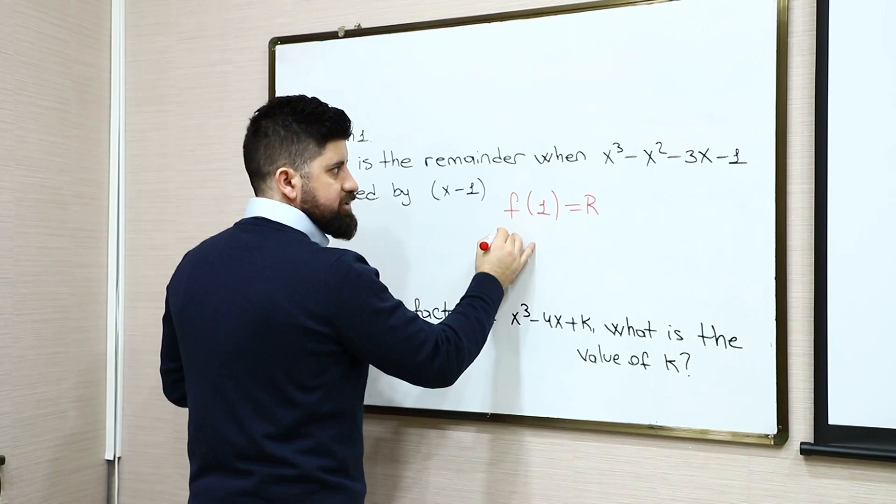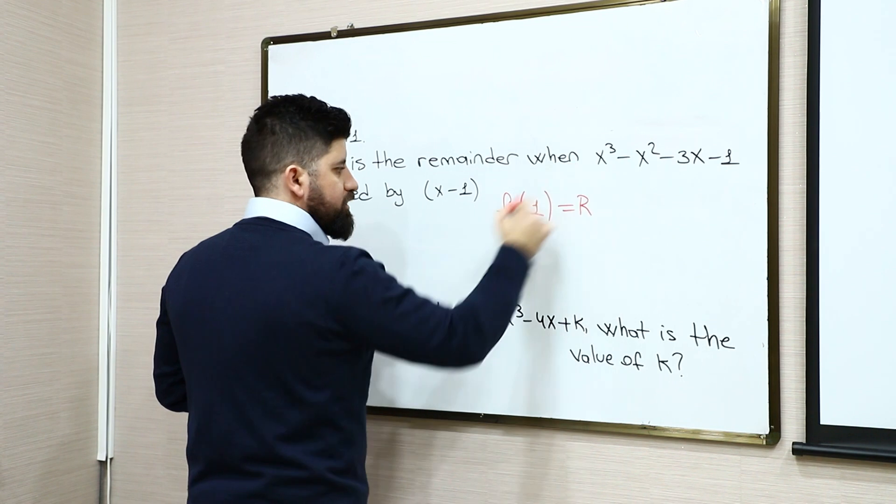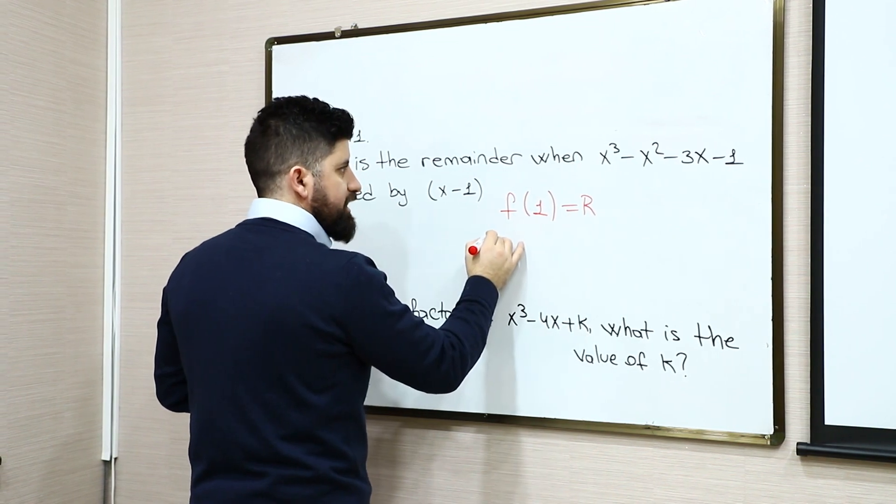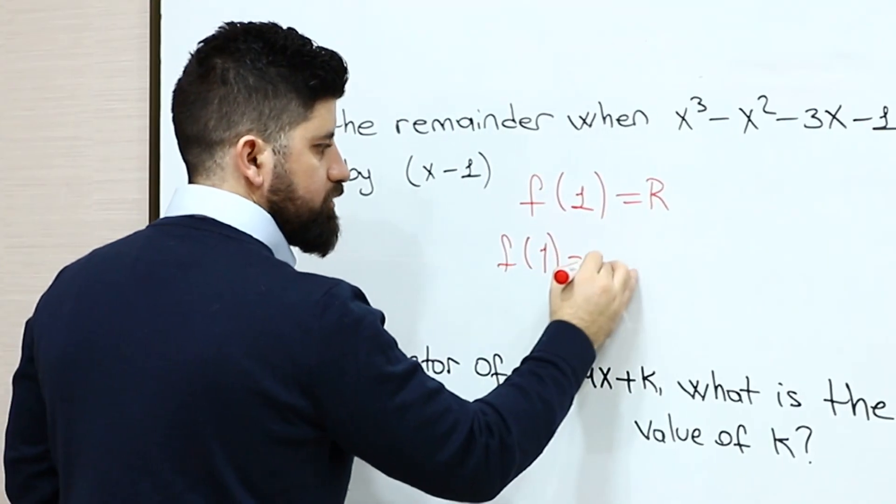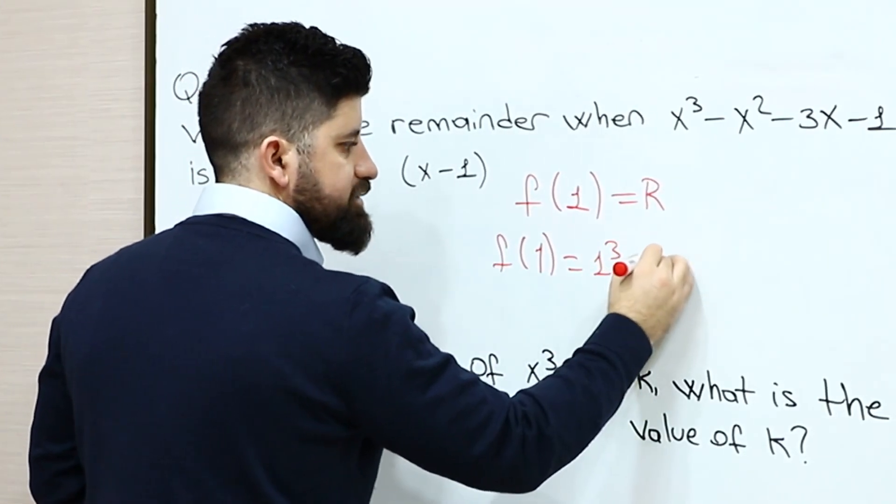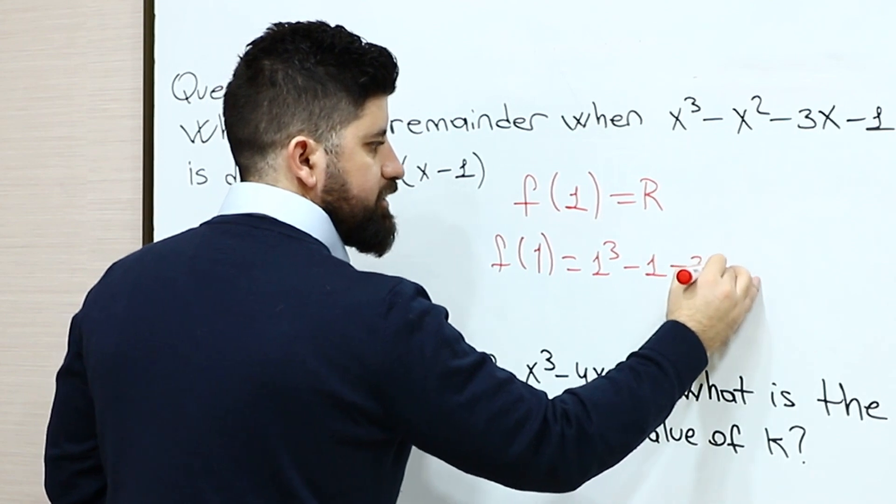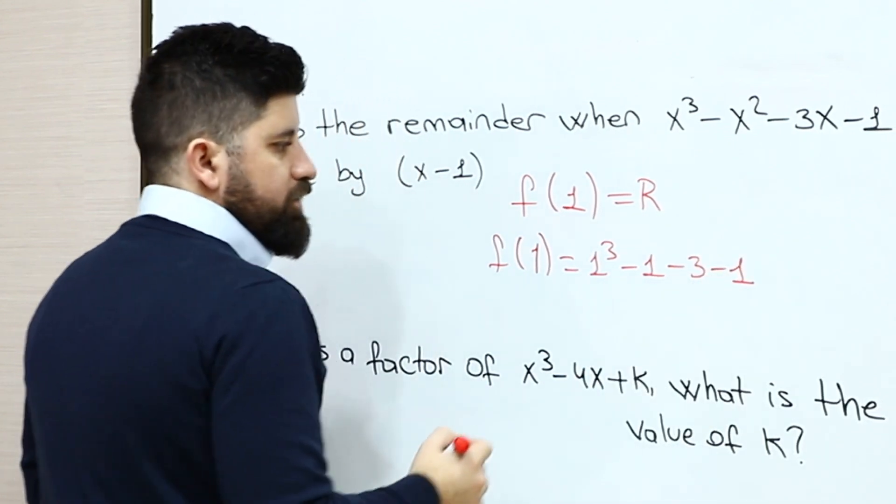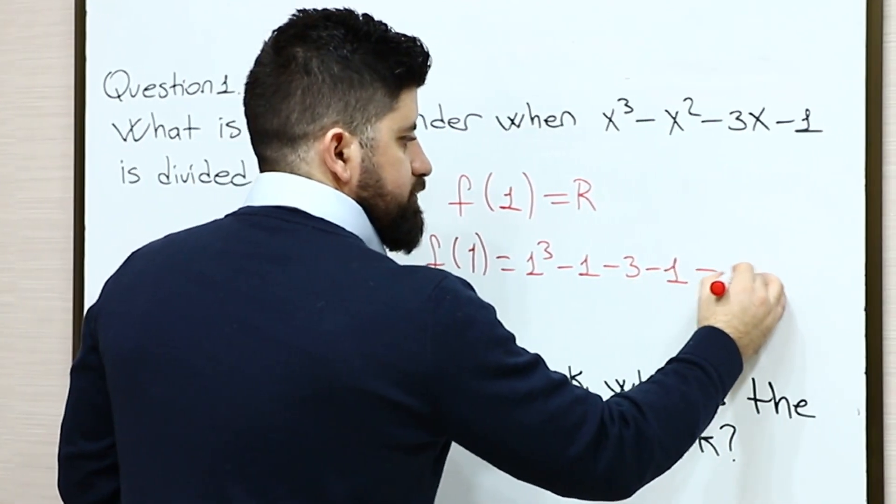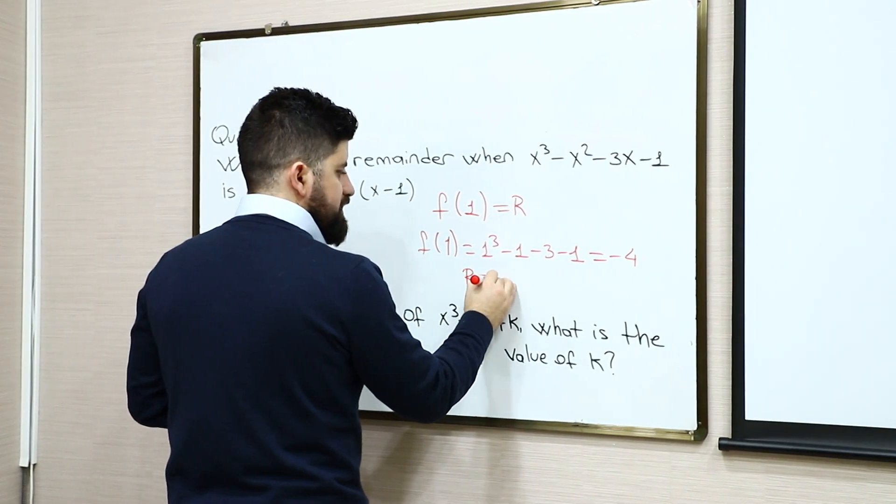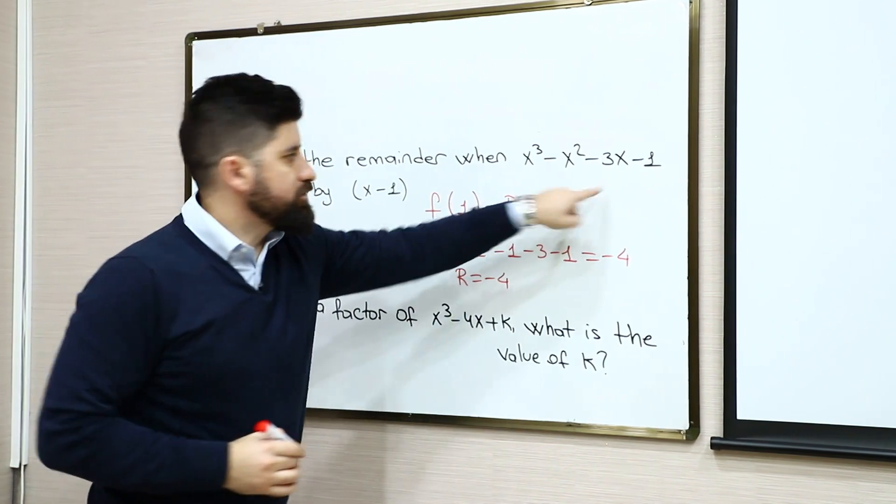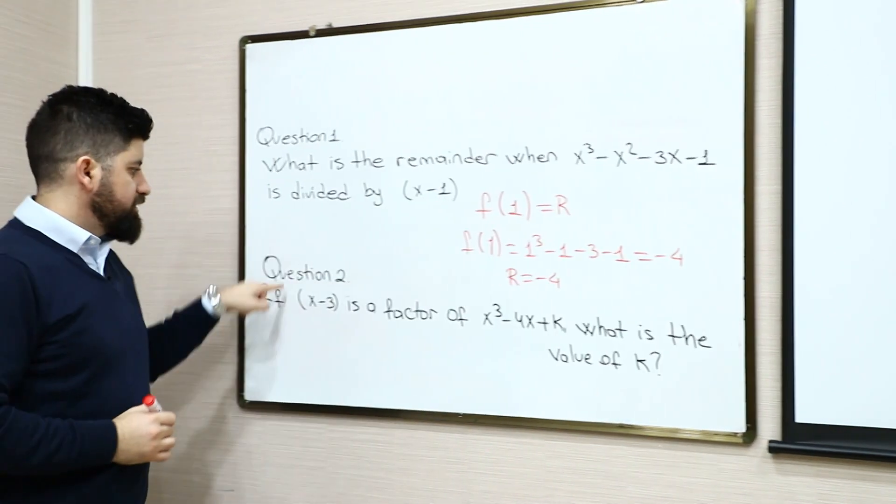So let's just simply plug 1 in x. So I will get what? f(1) is equal 1³ minus 1 minus 3 minus 1. It's going to be equal to negative 4, which means that the remainder is negative 4 when this polynomial is divided by x minus 1.